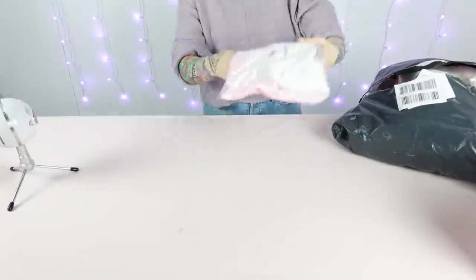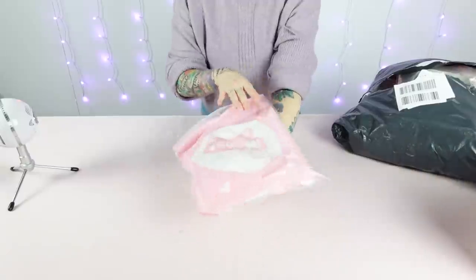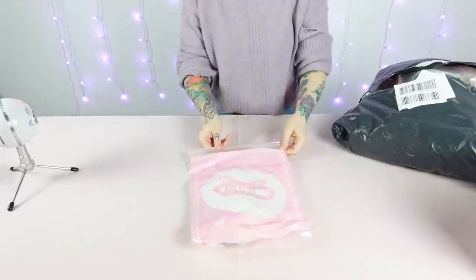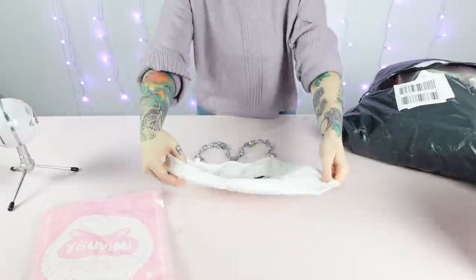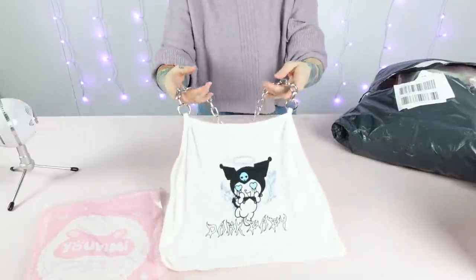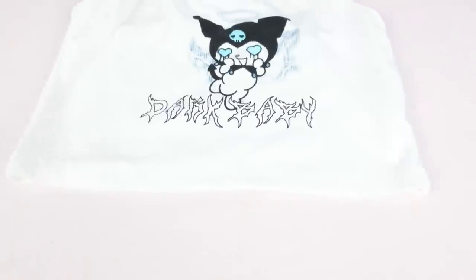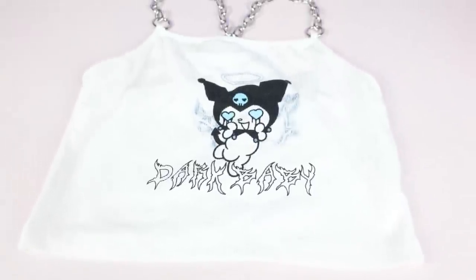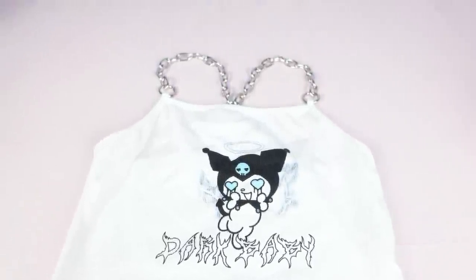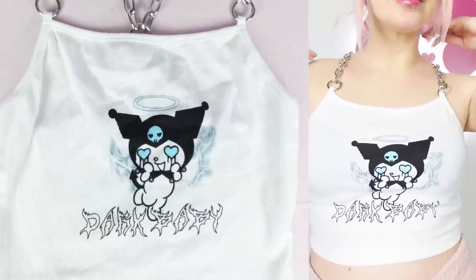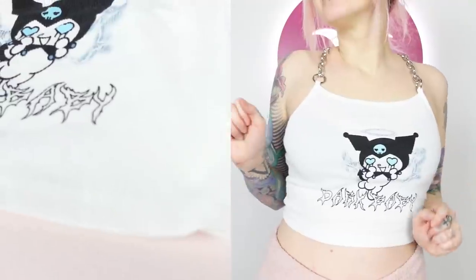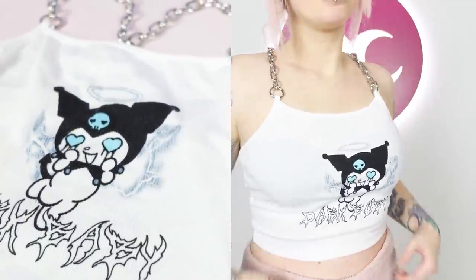Okay so the first thing I chose from Uvimi is this crop top with Kurumi on it. I love the little ziplock bag in which it comes. The chain straps of this shirt are so cool and of course I had to get it because I love Kurumi and I love the Y2K aesthetic. The fabric is super soft and it's a perfect crop top for summer time. The metal straps are a bit cold when you put it on but they warm up in no time.